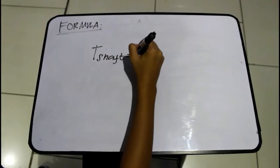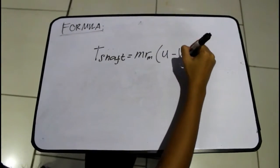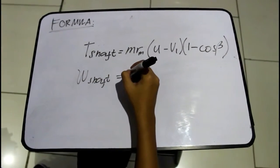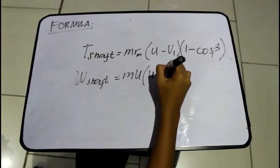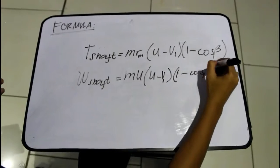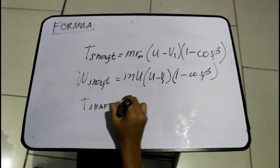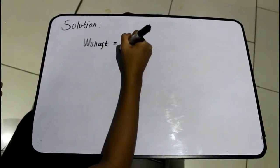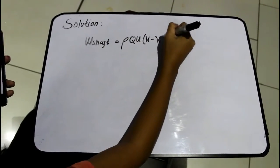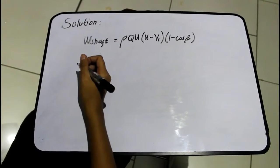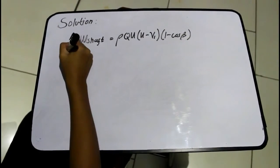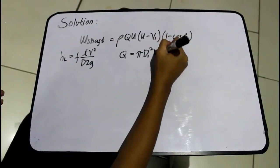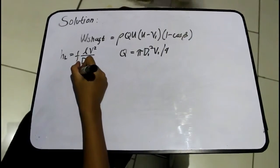The formula for T-shaft equals m-dot times r times U minus V1 times 1 minus cos beta, or W-shaft equals m-dot times U times U minus V1 times 1 minus cos beta. We assume U equals W-shaft. The solution uses: W-shaft equals density times Q times U times (U minus V1) times (1 minus cos beta); HL equals f times L times V squared over D times 2g; and Q equals pi times D1 squared times V1 over 4.